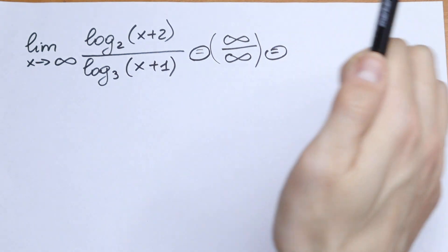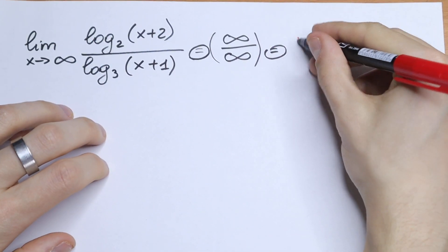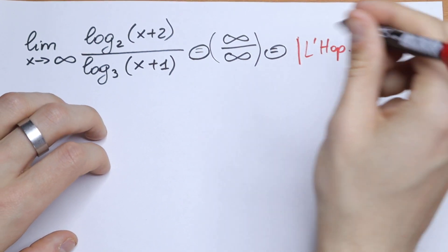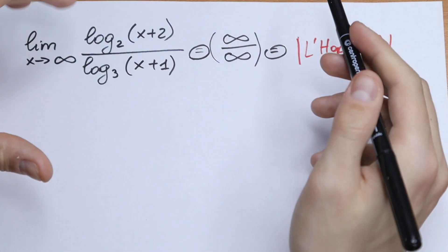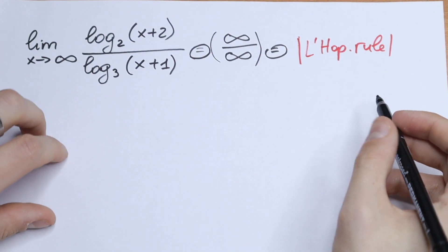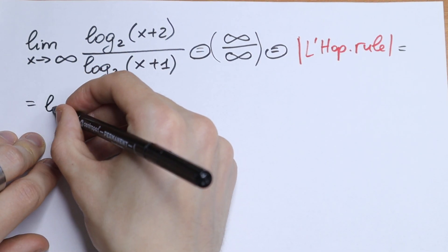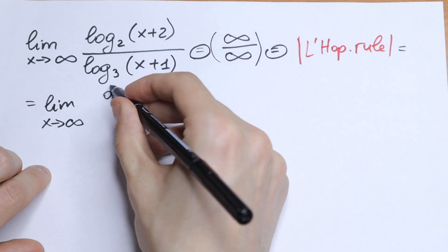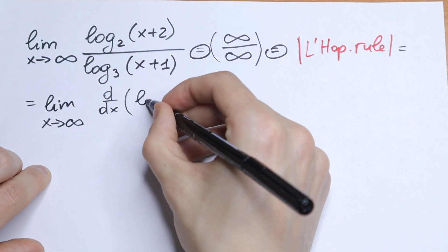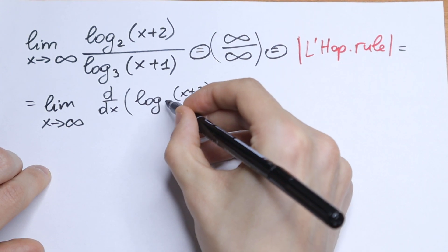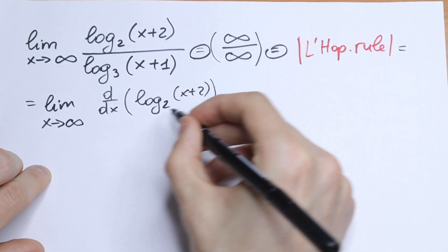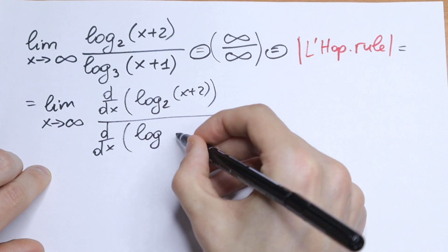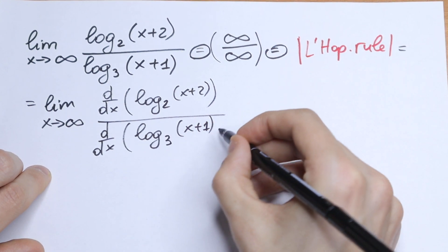How can we simplify this? A really good method to solve it is to use L'Hôpital's rule. So let's use this rule — we will take the derivative of the numerator over the derivative of the denominator. This will be equal to the limit as x approaches infinity of d/dx of log(x+2) base 2, all over d/dx of log(x+1) base 3.